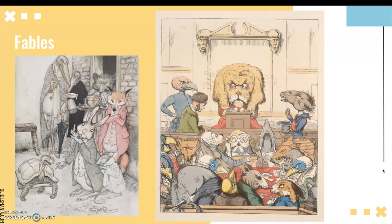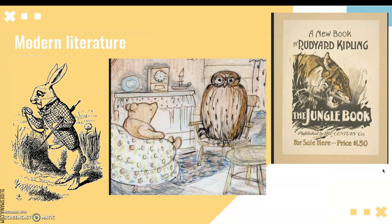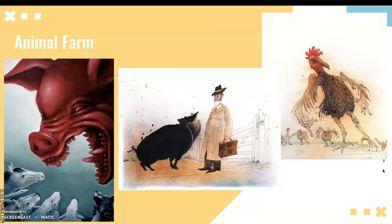In fables, anthropomorphized animals appear as human-like characters. These are two illustrations from Aesop's Fables and we can recognize them as they look human but at the same time they have animal details. In modern literature we see anthropomorphic characters in Alice in Wonderland, The Jungle Book, Winnie the Pooh, and even George Orwell's Animal Farm. Later on we're going to look at some popular movie examples, but these are just some from a long time ago.